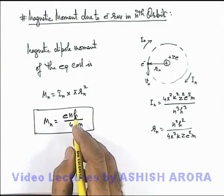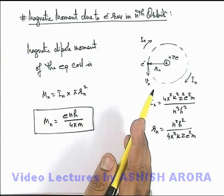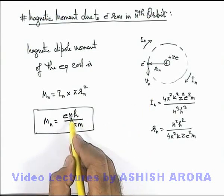For the n-eth orbit we get, it is independent of the atomic number of the atom. It depends only on the quantum number of the orbit.